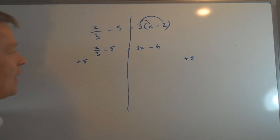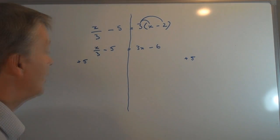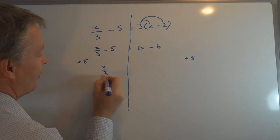x over 3 minus 5 plus 5—minus 5 plus 5 is 0—so it's going to leave me with x over 3.